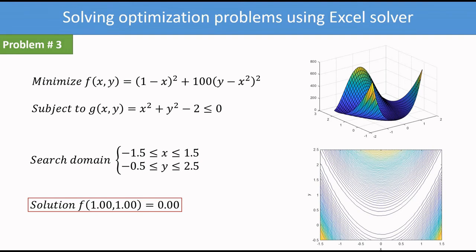The third problem is a constrained minimization problem. The function is f = (1-x)² + 100(y - x²)², and the constraint is x² + y² - 2 ≤ 0. The search domain is x ∈ [-1.5, 1.5] and y ∈ [-0.5, 2.5]. The constrained solution is x=1, y=1, and the function value at the optimal point is 0. I have shown the surface plot and contour plot for this function.